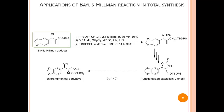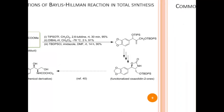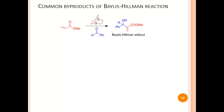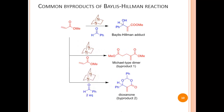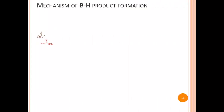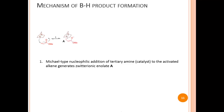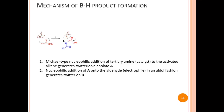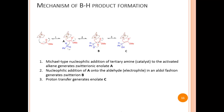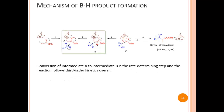Let us now briefly discuss the mechanistic aspects of the Bayliss-Hillman reaction. Apart from the Bayliss-Hillman adduct product, there are two common byproducts: the Michael-type dimer and dioxanone. For the main product, Michael-type nucleophilic addition of the catalyst to the activated alkene generates zwitterion A. Nucleophilic addition of A onto the electrophile generates zwitterion B. Proton transfer then generates enolate C, and finally release of the catalyst leads to the Bayliss-Hillman adduct. The conversion of intermediate A to B is considered the rate-limiting step, and the reaction follows third-order kinetics.